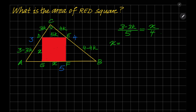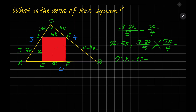We also note that X is equal to 5K. So the equation becomes: (3 minus 3K) over 5 equals 5K over 4, which gives 12 minus 12K equals 25K, so 12 equals 37K, and K equals 12 over 37. Therefore X equals 5K equals 5 times 12 over 37, which is 60 over 37.